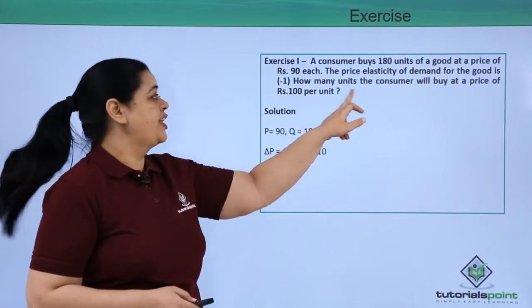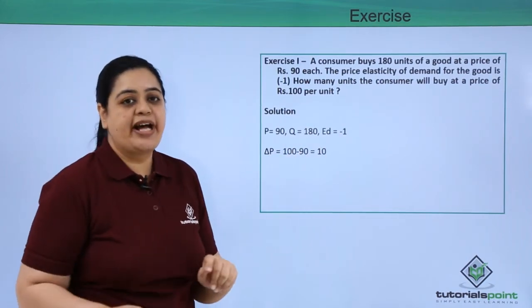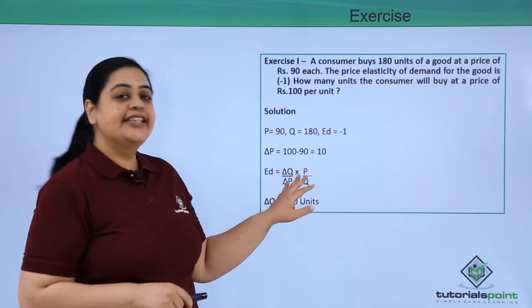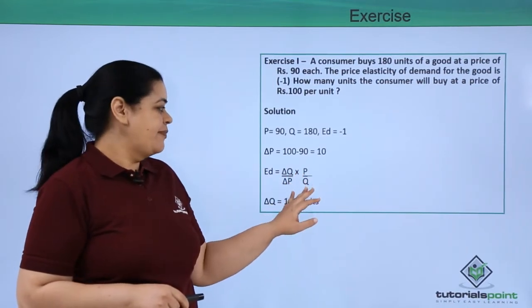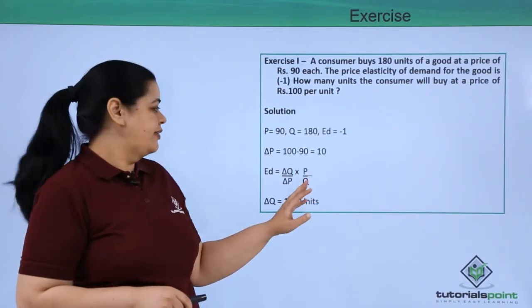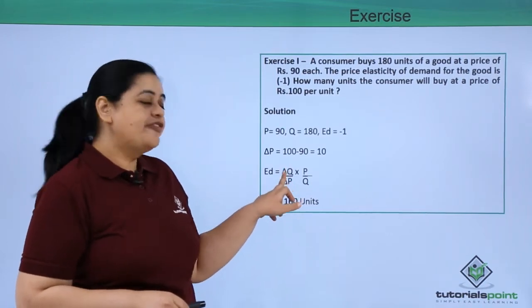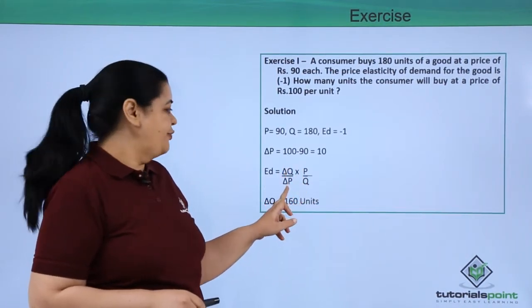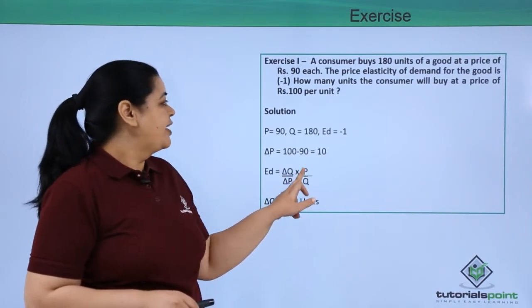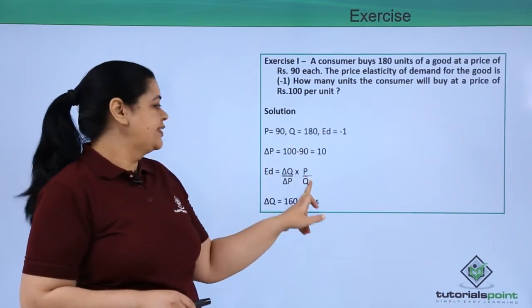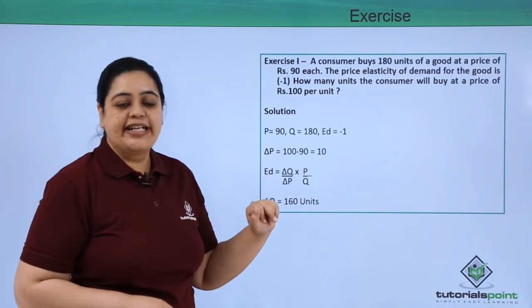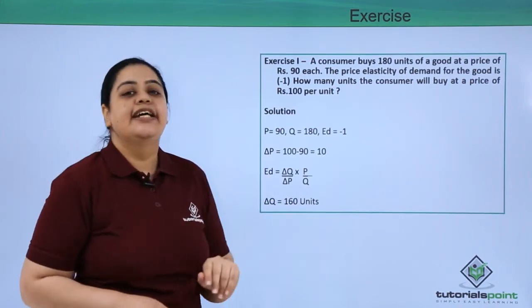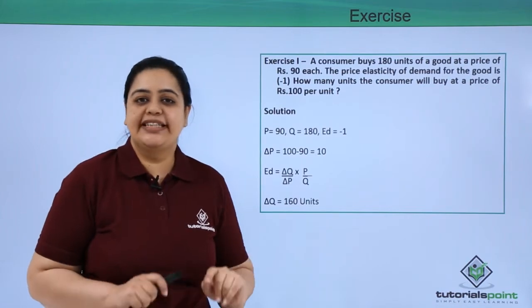We need to find how many units the consumer will buy at a price of 100. Ed = (ΔQ/ΔP) × (P/Q). We have to find ΔQ. So -1 = (ΔQ/10) × (90/180). If you substitute the numbers and calculate, you will get ΔQ = 160 units.